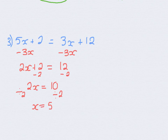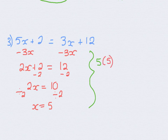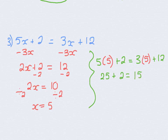And now, if we're a bit worried, we can always check our answer. I'm saying that 5x plus 2 is equal to 3x plus 12. I'll replace my x with what we solved for — x equals 5. On the left side I have 5 times 5, which is 25, plus 2. On the right side I have 3 times 5, which is 15, plus 12. 25 plus 2 is 27, and 15 plus 12 is also 27. Therefore this checks out, and our x is for sure equal to 5.